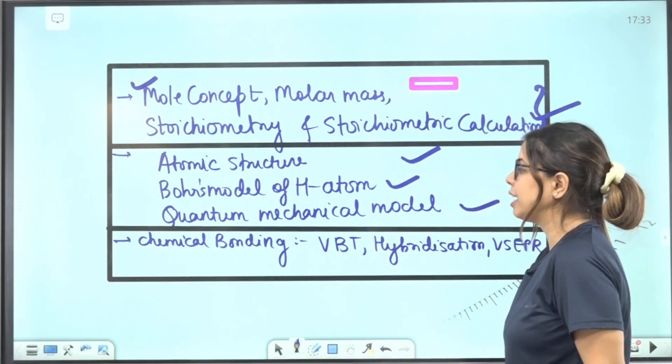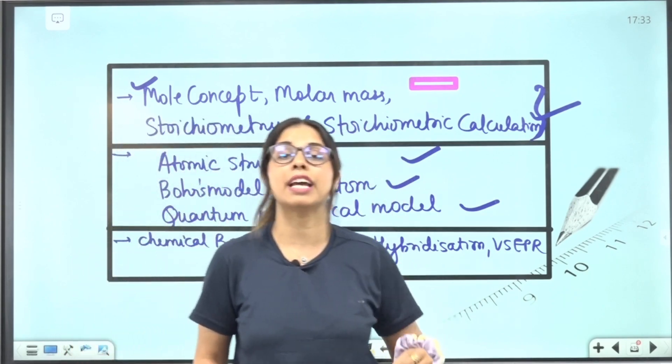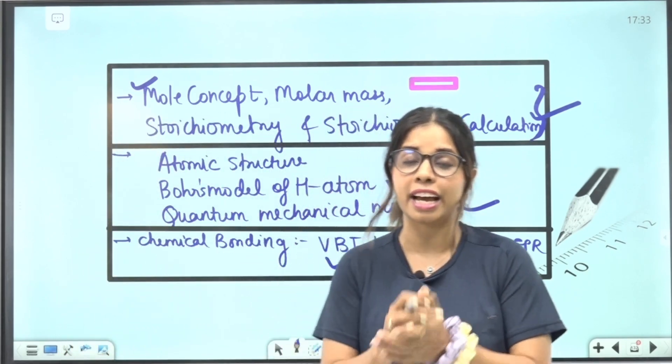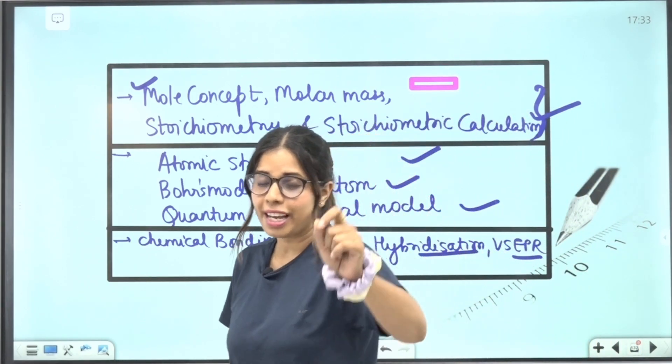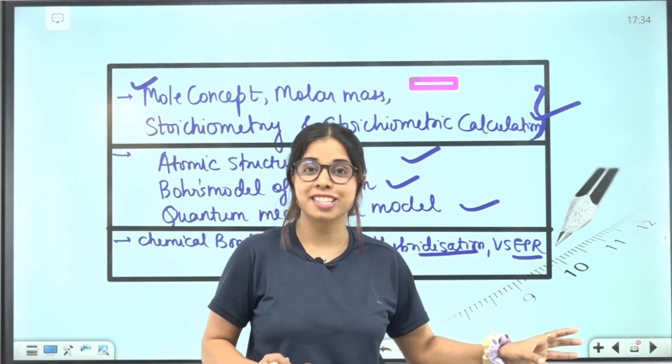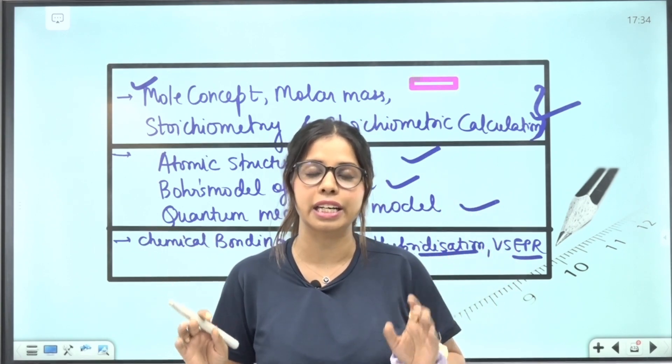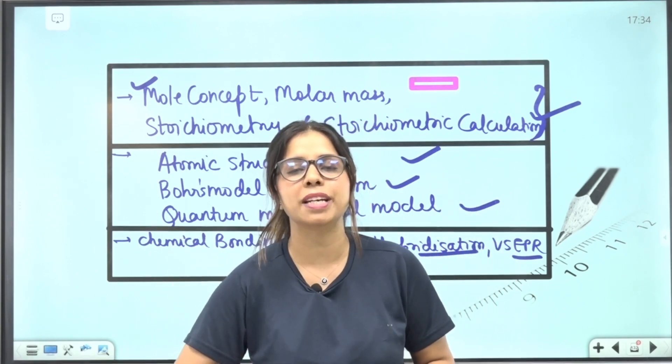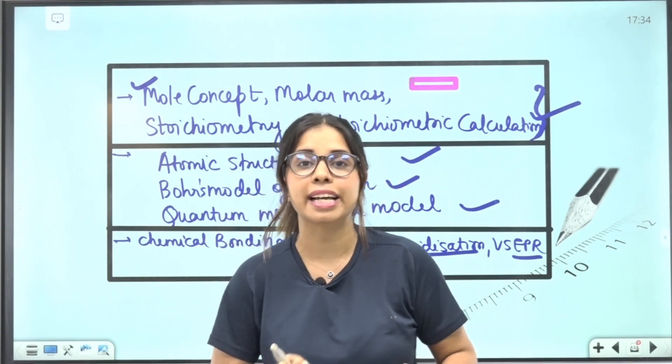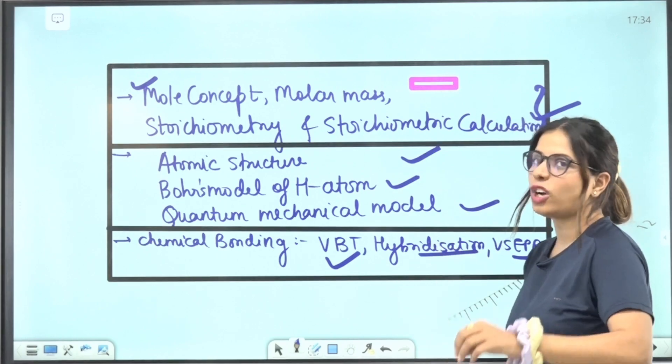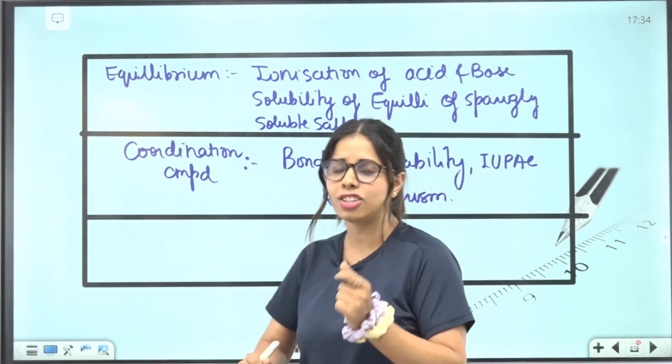If you take Chemical Bonding, then within that we can definitely claim which topics you have to do: 100% Valence Bond Theory, Hybridization and VSEPR Theory. If there is no question from these topics, you have to write to me. You will definitely get them in the NEET exam.